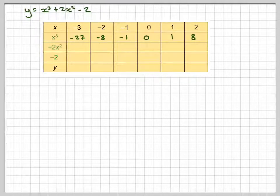Then minus 3 squared is 9, 9 times 2 is 18. Minus 2 squared is 4, 2 times 4 is 8. Minus 1 squared is 1, 1 times 2 is 2.